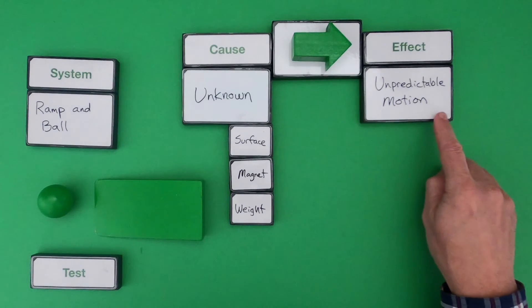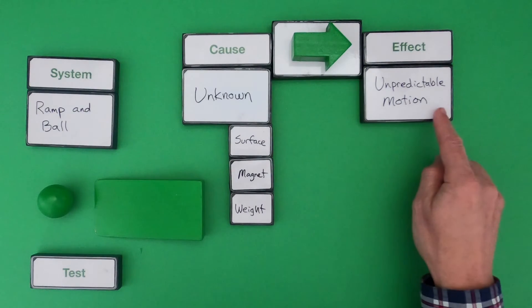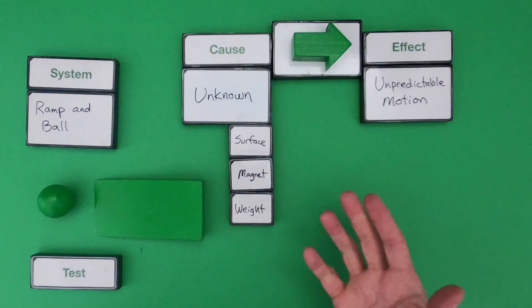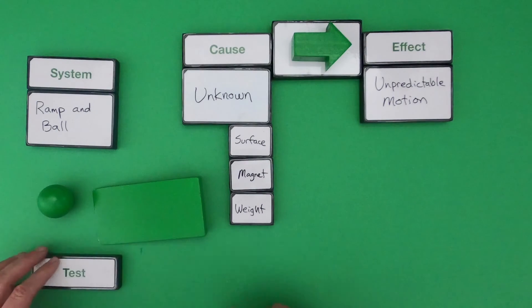So what I've shown you here is that the effect is the unpredictable motion. The cause is unknown. We don't know what might be causing it. But I've listed or brainstormed some ideas of what might be causing it. It could be the surface it's rolling down. There might be a magnet or a weight. And so these are all possible causes.